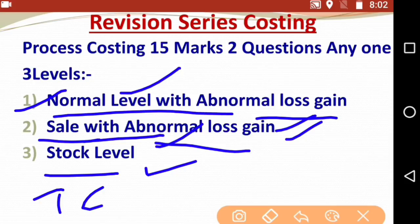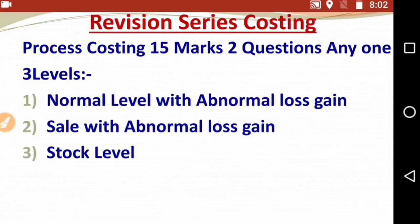How do you divide the marks? If three processes are asked, you will get 5 marks per process. If it is a stock level question, you will get 3 marks for your process account and 2 marks for your stock account.